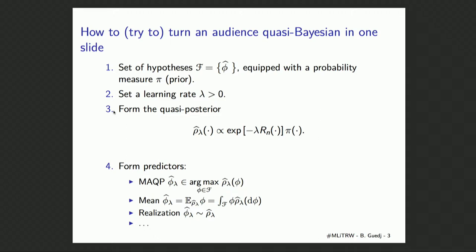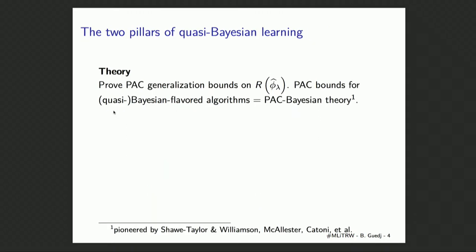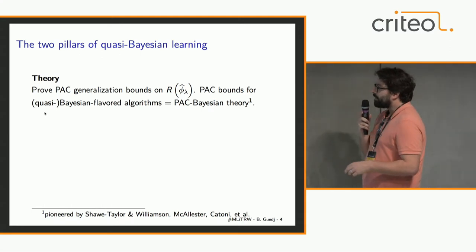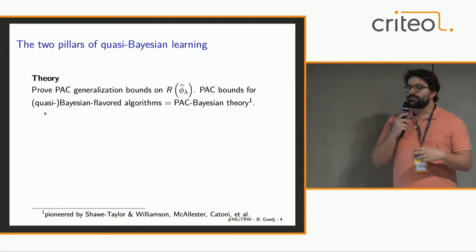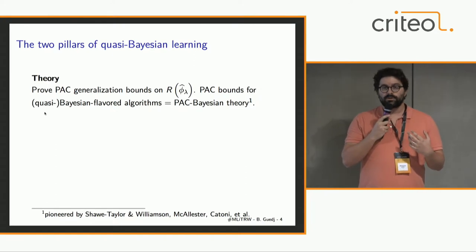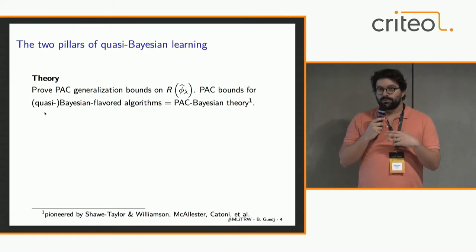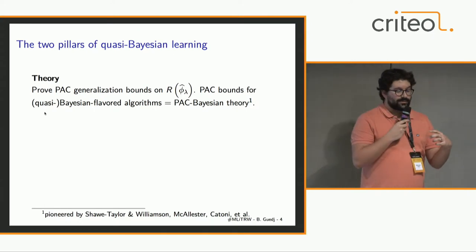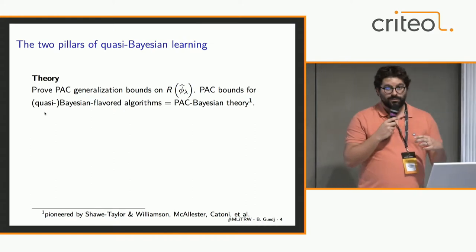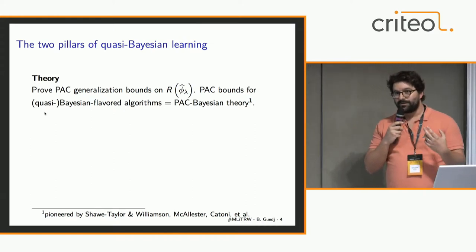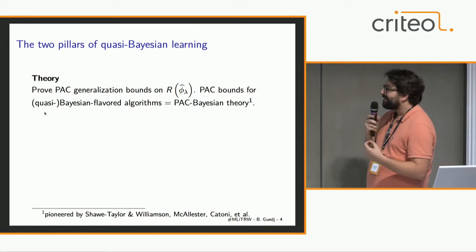So this is really quasi-Bayesian learning in a nutshell. The story gets interesting when you want to prove theoretical results on such estimators. The two pillars of quasi-Bayesian learning are: first, obtaining PAC generalization bounds. PAC-Bayesian learning is just quasi-Bayesian learning combined with PAC bounds. If you're able to obtain PAC generalization bounds on Bayesian-flavored or quasi-Bayesian-flavored estimators, you're doing PAC-Bayesian learning.